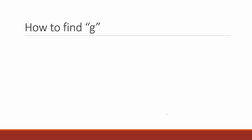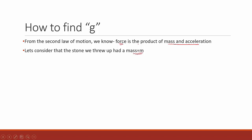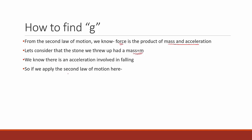Now let us see how we can find g — the acceleration due to gravity. According to Newton's second law of motion, force equals mass times acceleration. If we consider the stone of mass m falling under gravity, we apply the second law to get: F = mg. Here g is the acceleration due to gravity and m is the mass of the stone.